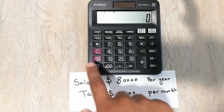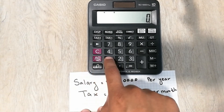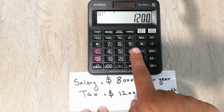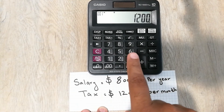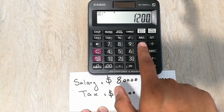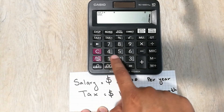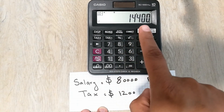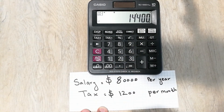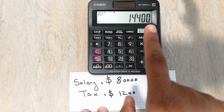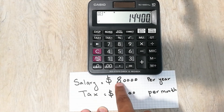So in that case, to find out the tax rate, first we take the value twelve hundred. We type twelve hundred and multiply it with twelve because there are twelve months in one year. Our answer is fourteen thousand four hundred. This is the first step.